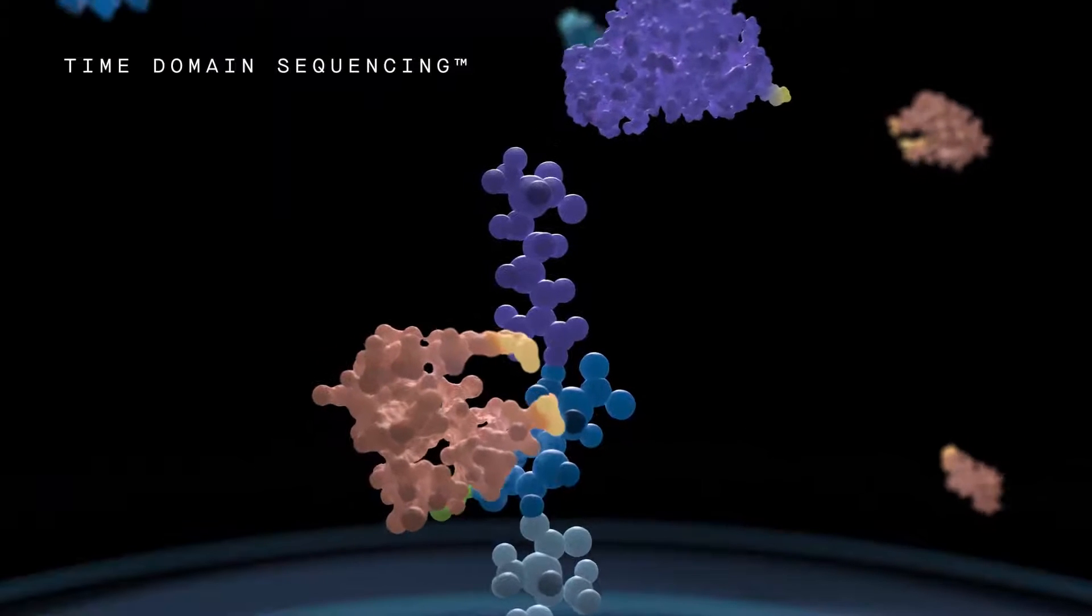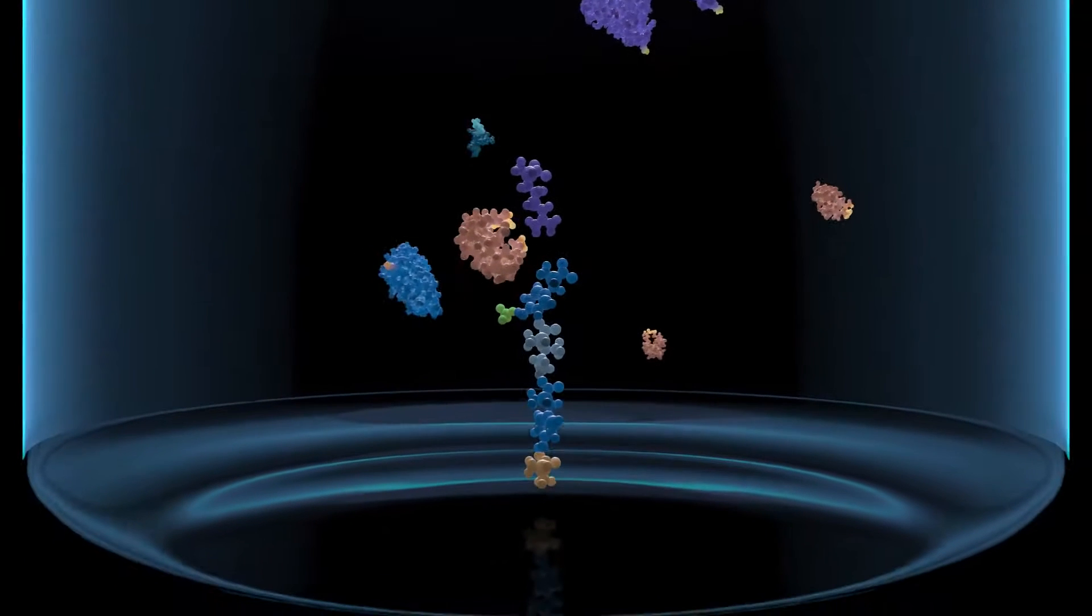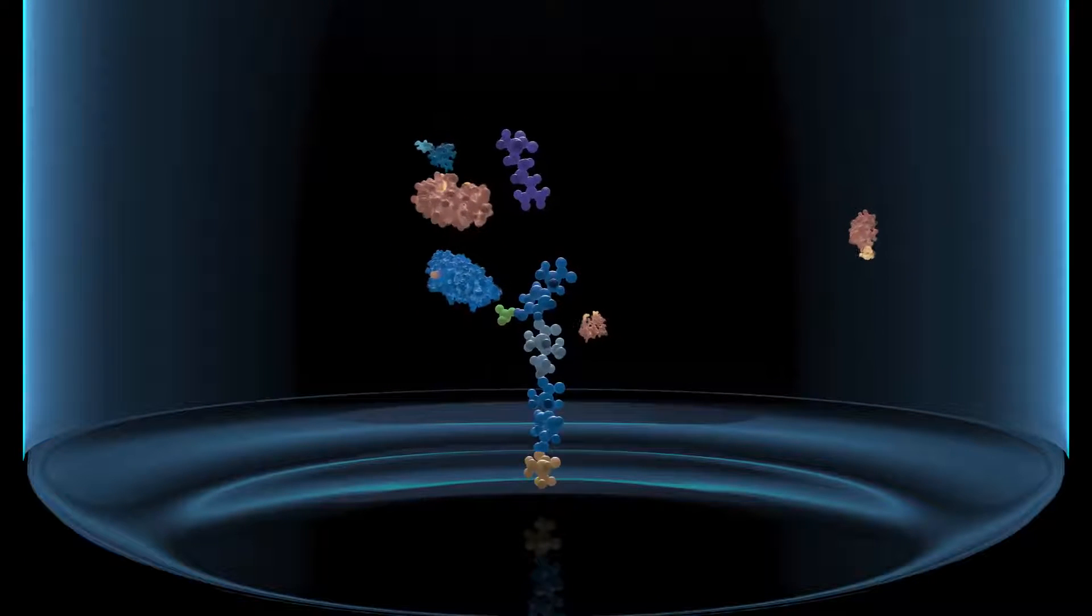After many binding events of the recognizer, another molecule called a cutter removes the terminal amino acid, exposing the next amino acid in line.